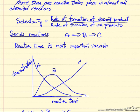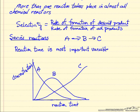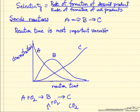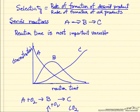So it turns out then for series reactions that reaction time is our most important variable. Certainly temperature is going to change the relative rates of formation of B and C, and higher temperature will favor the reaction with the higher activation energy as discussed for parallel reactions in another screencast. But if we just look at the effects of reaction time, we concentrate on that because that's what we can control.